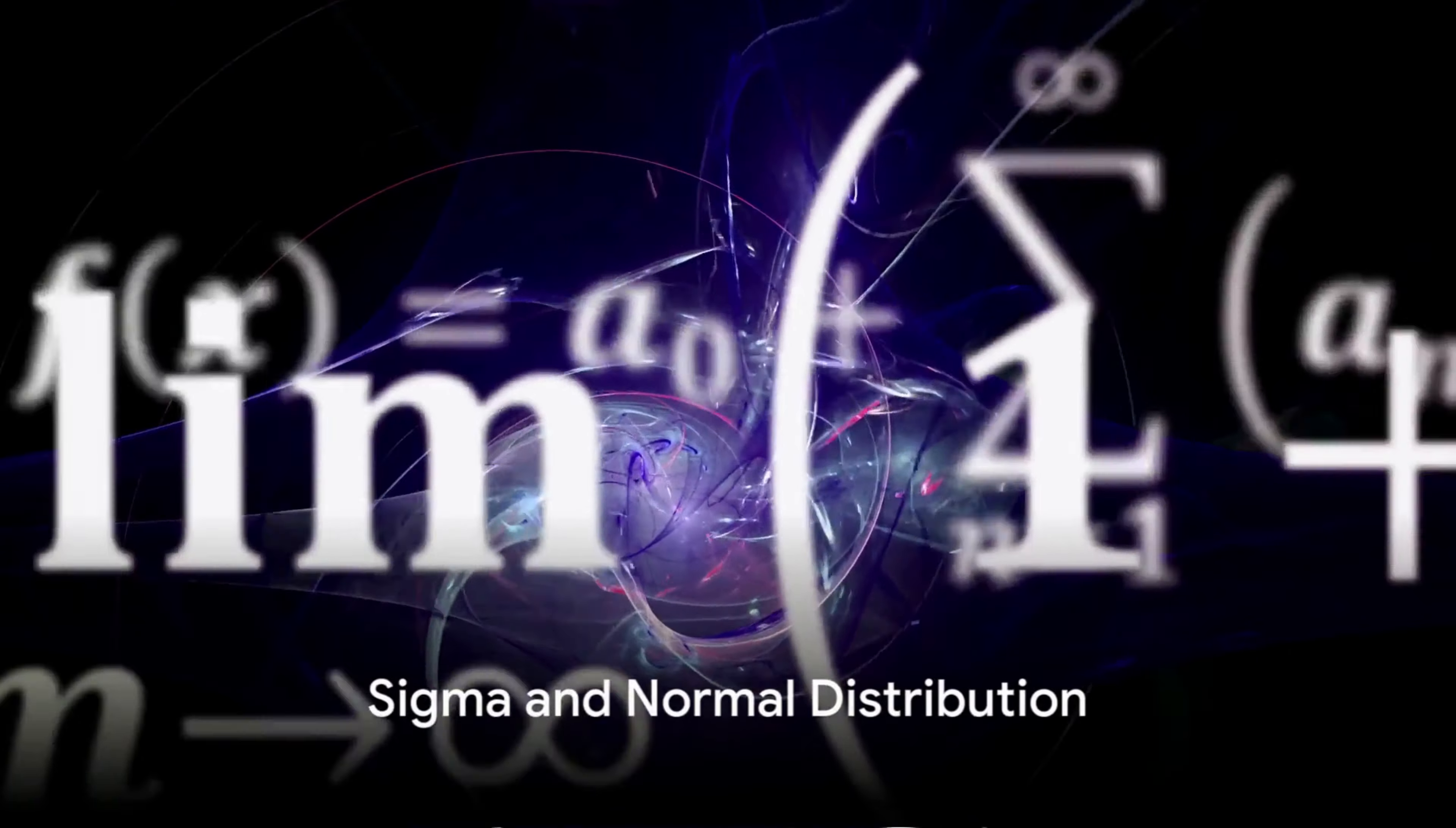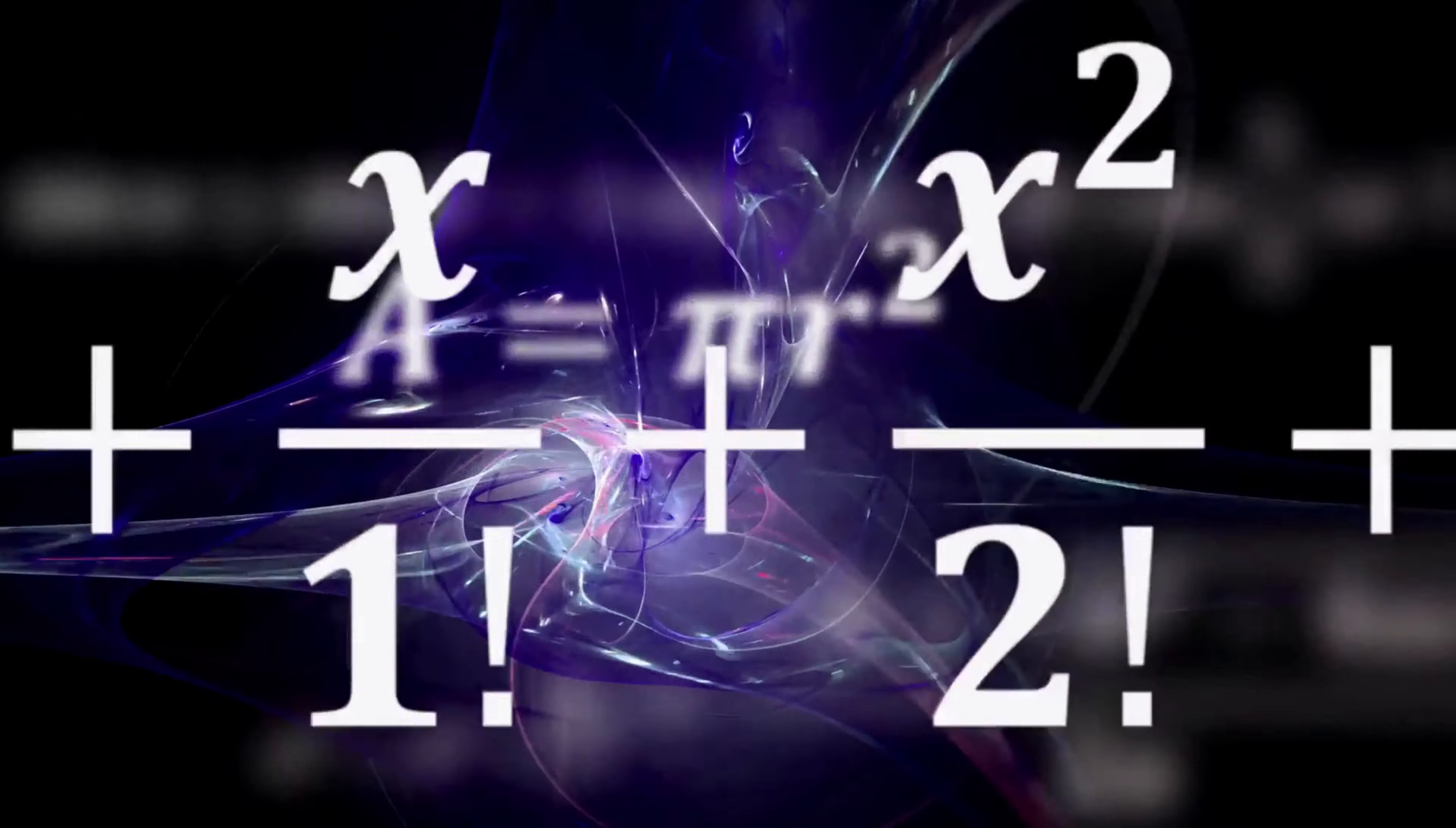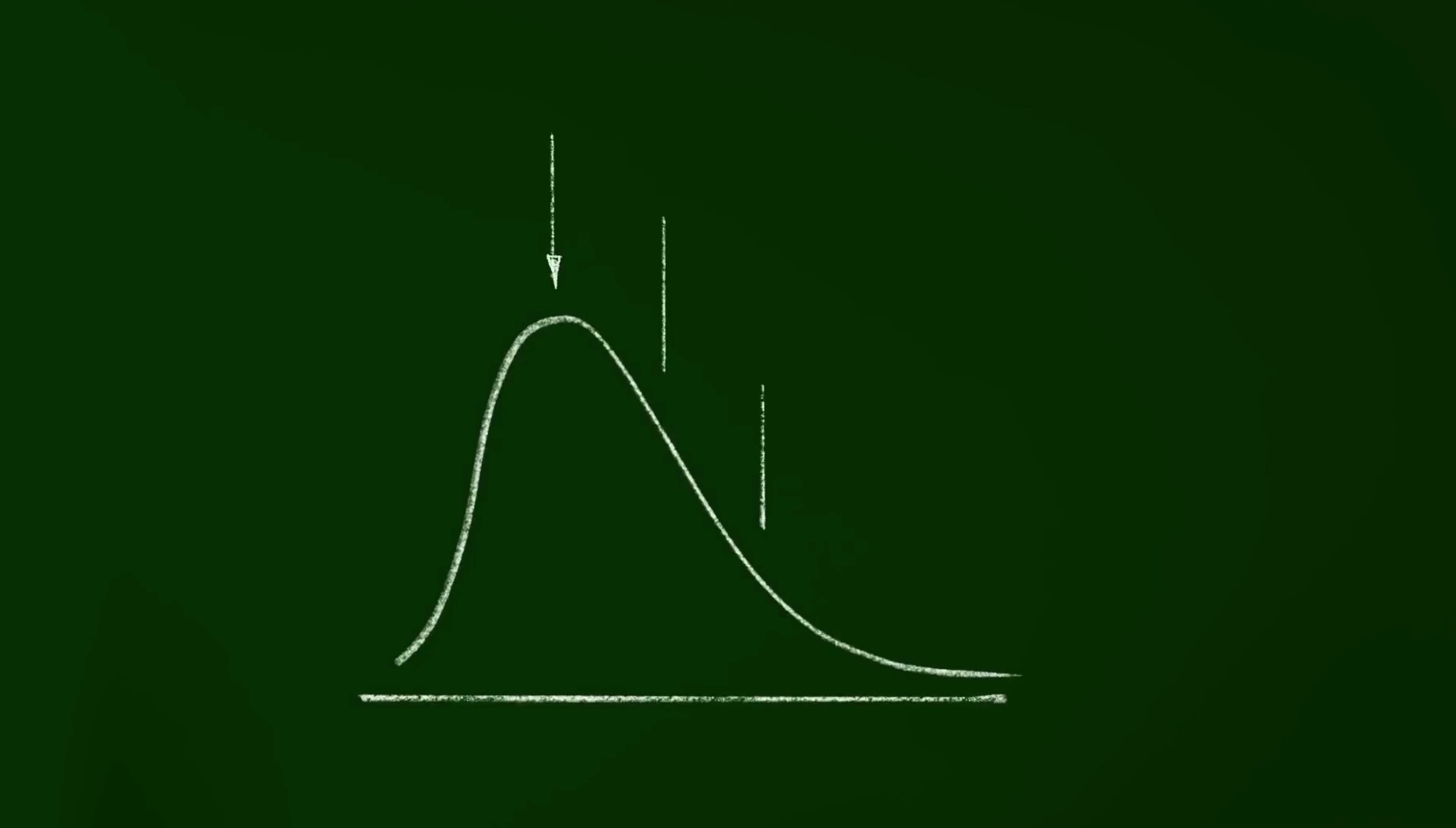Now, you may be wondering, what does normal distribution have to do with sigmas? Well, let's dive right into it. Normal distribution, also known as the bell curve, is a statistical concept that describes how data points tend to cluster around the mean or average.